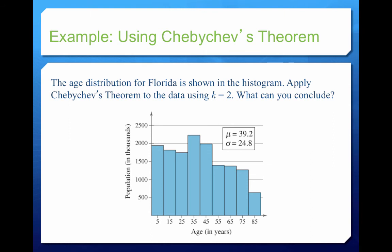Here's an example. The age distribution for Florida is shown in the histogram. Apply Chebyshev's theorem to the data using k equals 2 — what can we conclude? Our mean is 39.2, which is the average age of people living in Florida, and our standard deviation is 24.8. Notice: does this distribution look symmetric? No, of course it doesn't. It looks like we've got a lot of young and middle-aged people — closer to uniform than symmetric. This is why we're using Chebyshev's theorem and not the empirical rule; we do not have that nice bell-shaped curve.